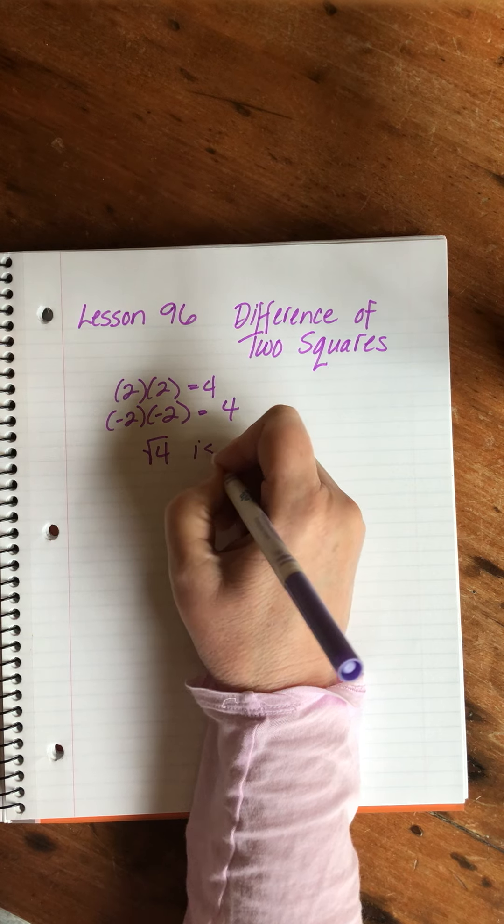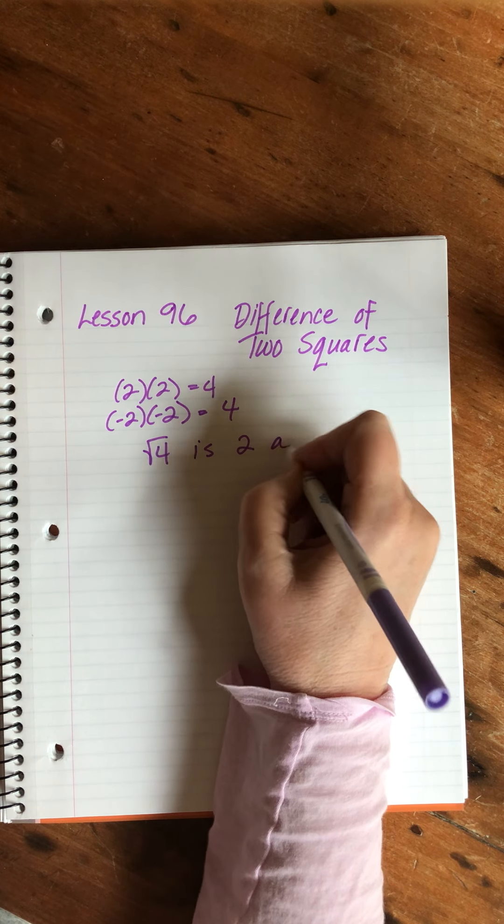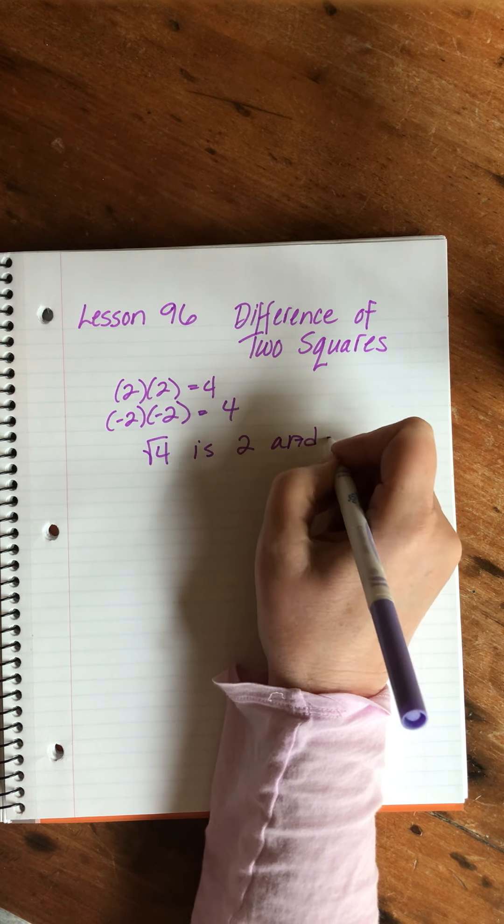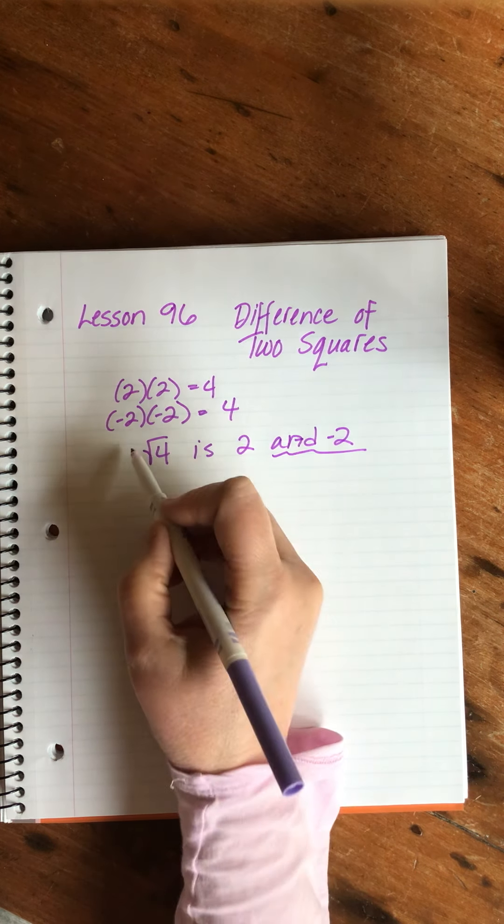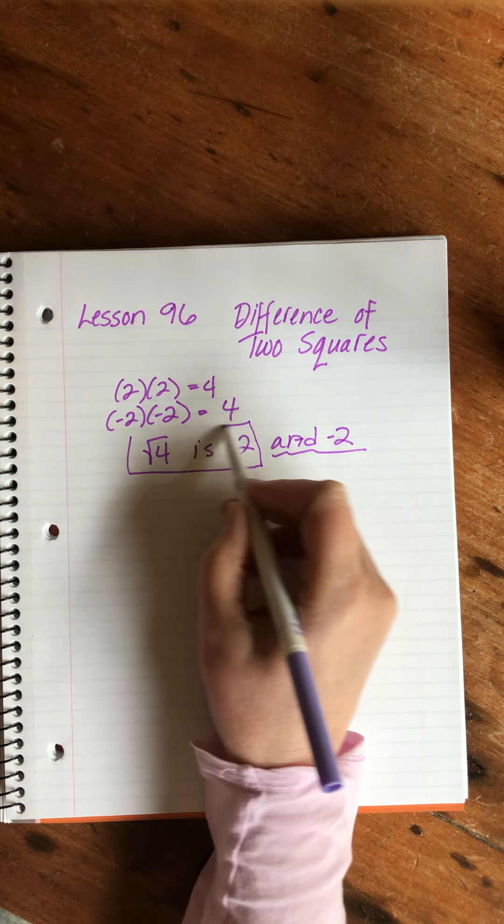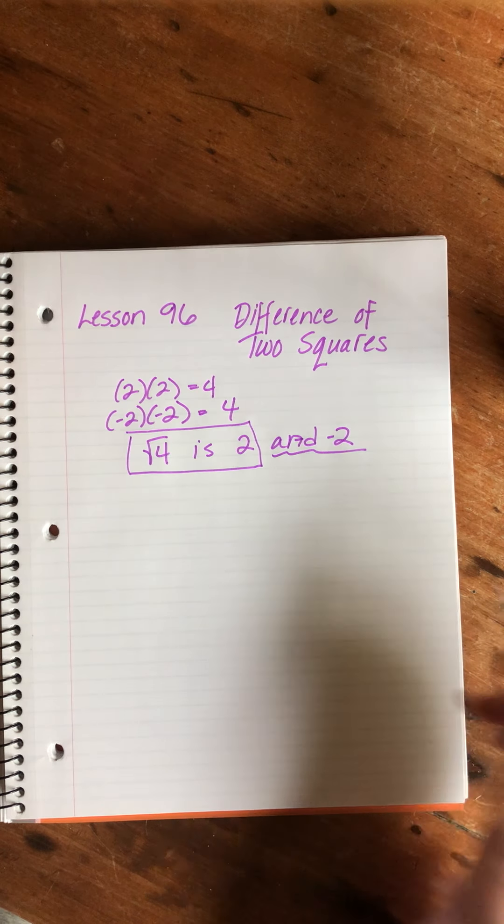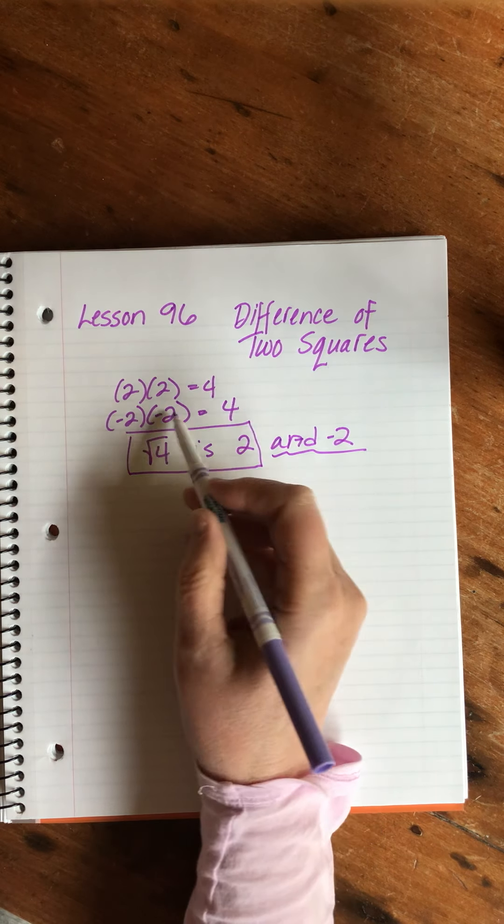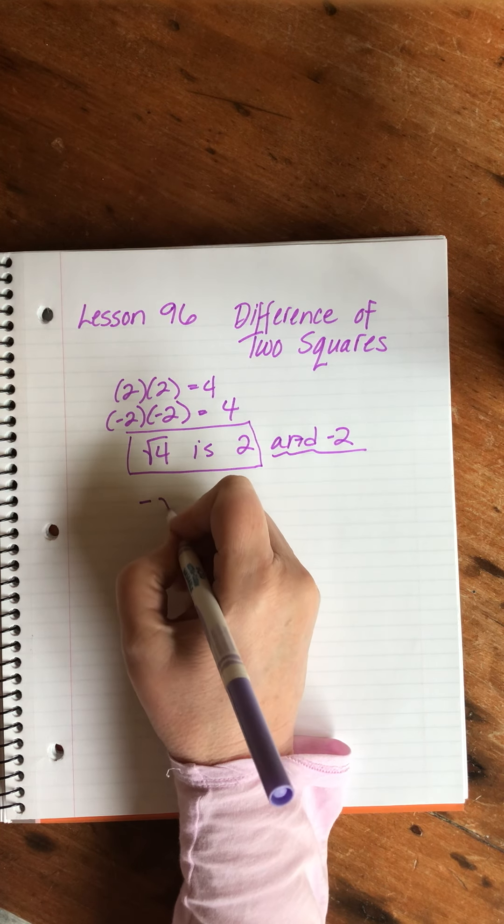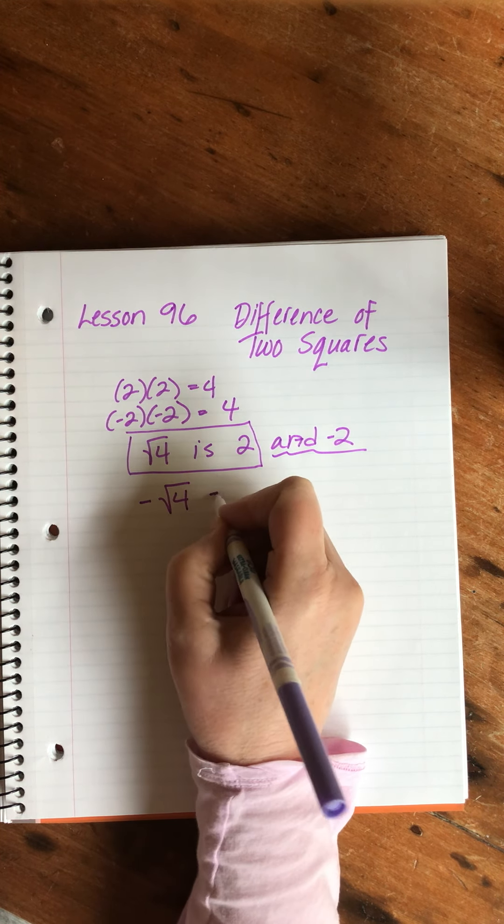If we're trying to specify that we want that negative two, we usually indicate it like that. If we cover this up, we'd say the square root of four is two, then we'd attach the minus sign. This is the way we typically indicate that we want the negative root of that.